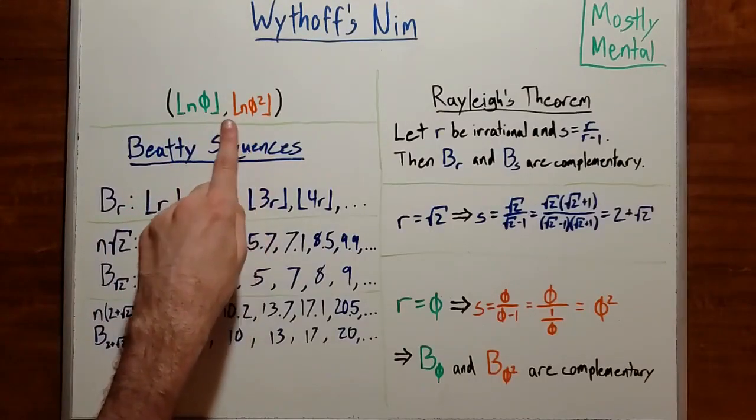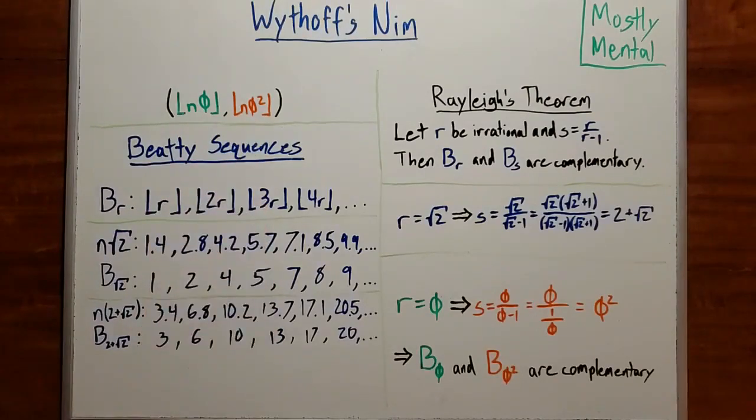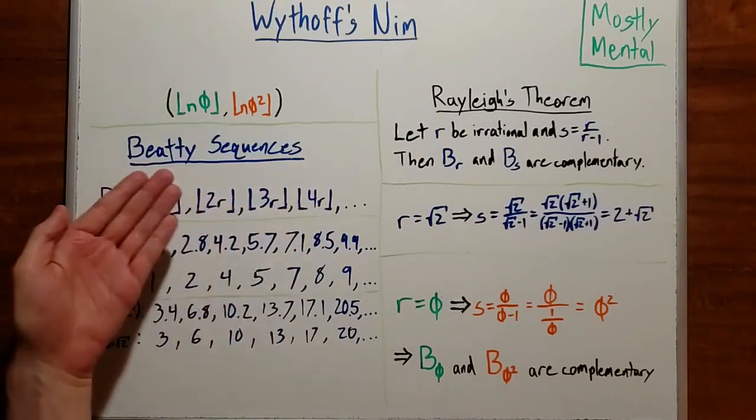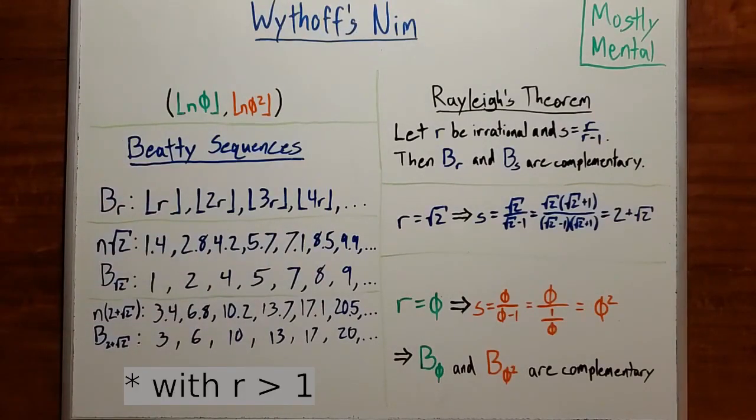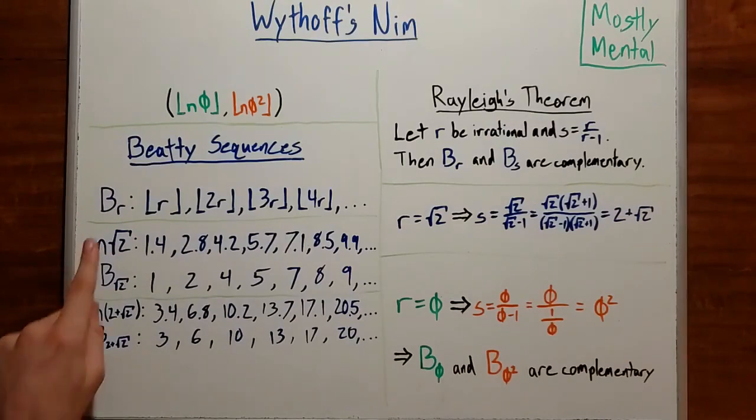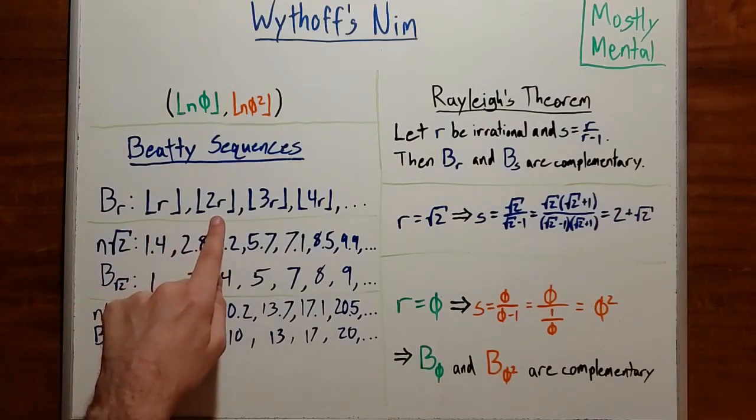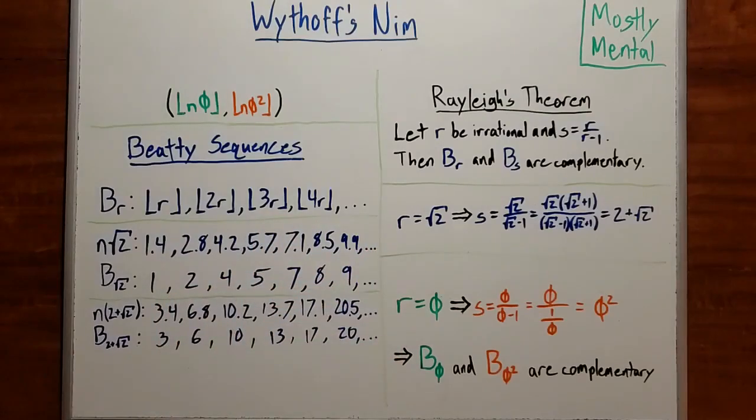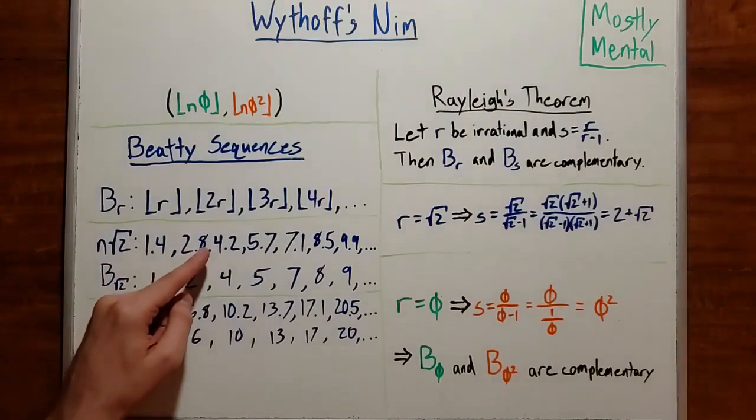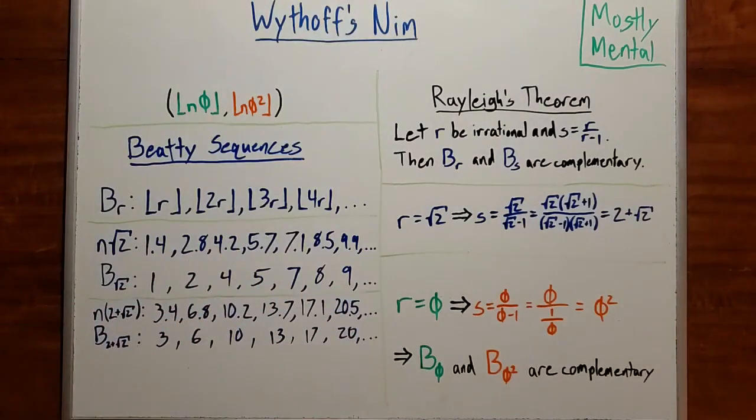Both of these sequences, floor of n phi and floor of n phi squared, are examples of what are known as Beatty sequences. Given an irrational number r, the associated Beatty sequence, br, is floor of r, floor of 2r, floor of 3r, and so on. It's the multiples of r rounded down. For example, the multiples of square root of 2 are 1.414, 2.828, 4.243, and so on. So the Beatty sequence for square root of 2 is 1, 2, 4, 5, and so on. Note that we're leaving out the leading zeros, just remember that we have them for later.